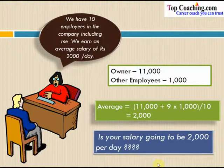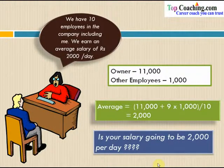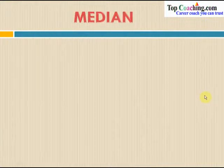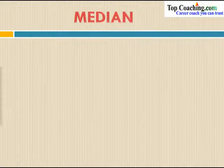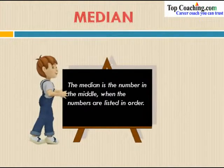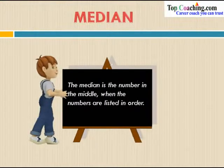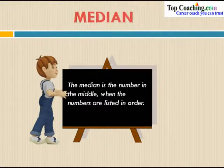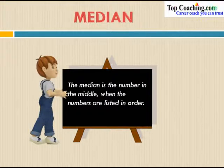Since the average doesn't always tell us the true nature of the data, there must be some other indicators. Let's look at the second type of average: the median. The median is the number in the middle when the numbers are listed in order. Whenever we list all numbers of a group in increasing order, the middle value is known as the median — it gives us the middle value of any group of data.